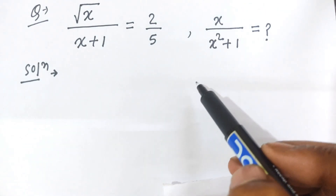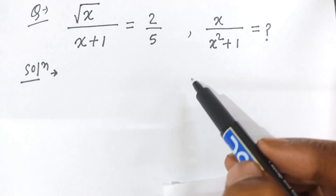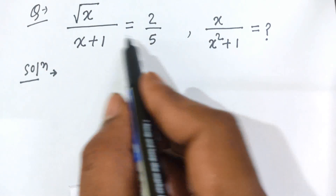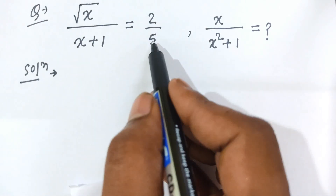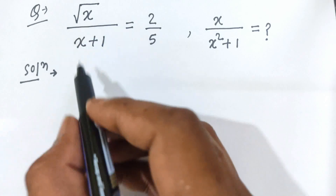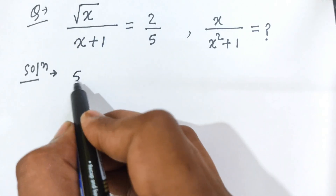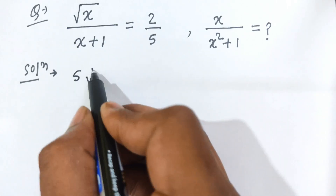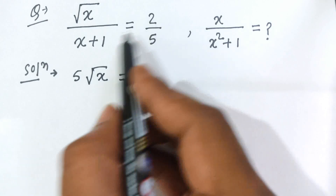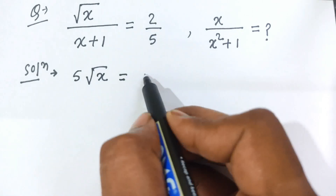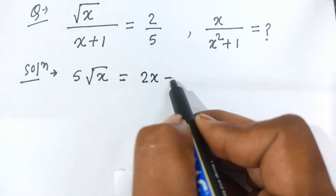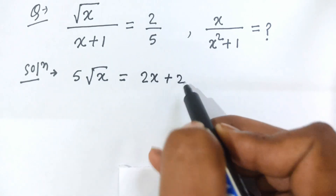So let's see, students, how we will solve this problem. By using cross multiply, then 5 is multiplied by square root of x, this is equal to 2 is multiplied by x plus 1, then we get 2 times x plus 2.